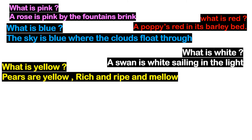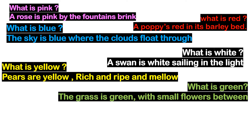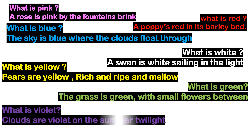And what is yellow? Pears are yellow, rich and ripe and mellow. What is green? The grass is green with small flowers between. What is violet? Clouds are violet on the summer twilight.